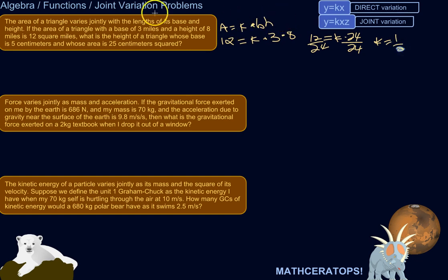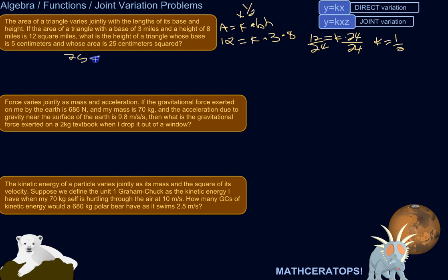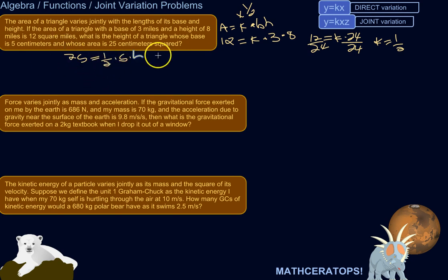Area is one half base times height. Now that we know the constant is one half, we can figure out the height of a triangle whose base is five centimeters and whose area is 25 centimeters squared. The area is the constant one half times the base of five centimeters, times height. We can multiply both sides by two to get rid of the one half, giving us 50 equals five times height. So the height is 10 centimeters.